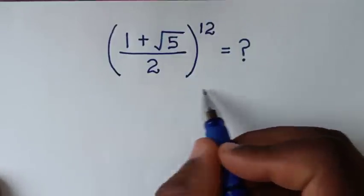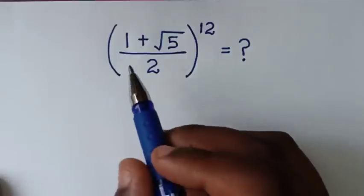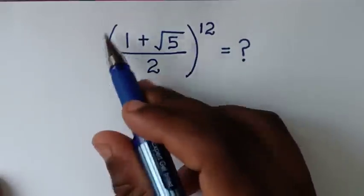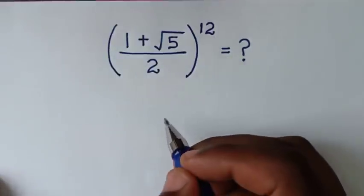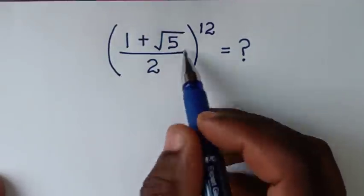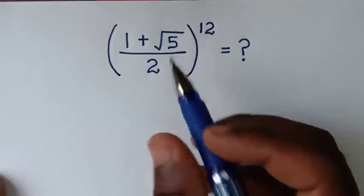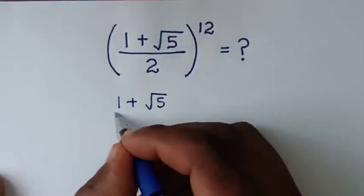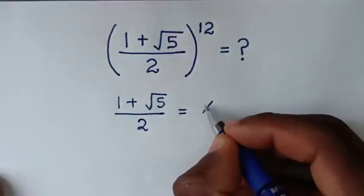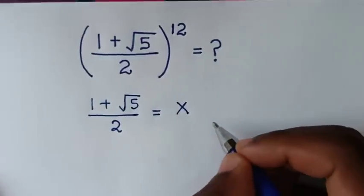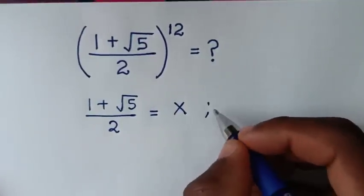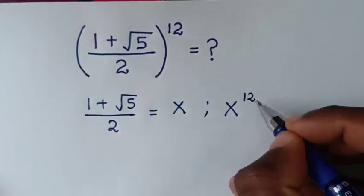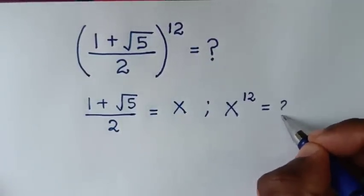Welcome. We are going to solve this math problem by simplifying (1 + √5)/2 raised to the power of 12. In the first step, we will start by letting the expression inside the bracket equal x, where x = (1 + √5)/2. So we will be finding the value of x to the power of 12.